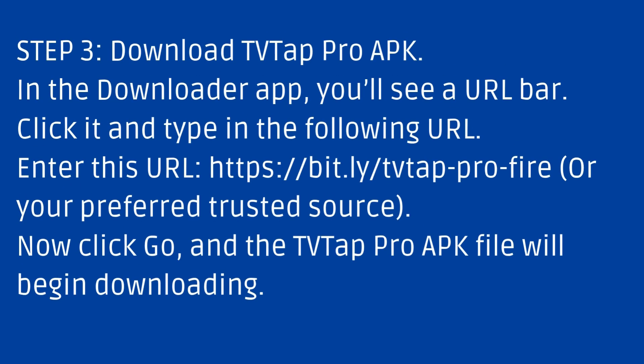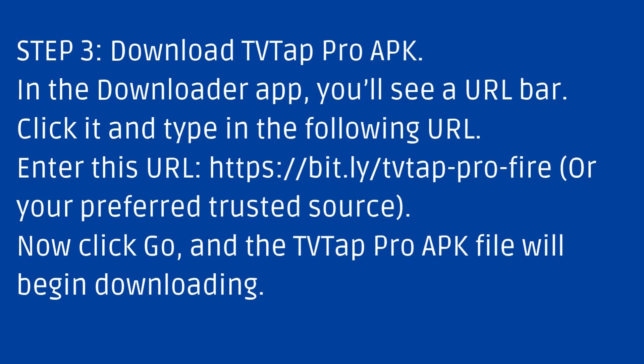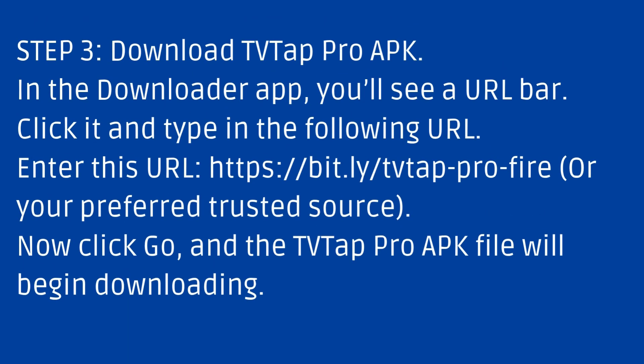Step 3: Download TVTap Pro APK. In the Downloader app, you'll see a URL bar. Click it and type in the following URL. Now click Go and the TVTap Pro APK file will begin downloading.